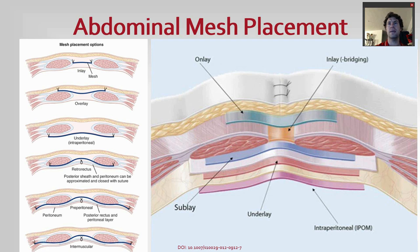With all these different spaces, there are many different ways to place mesh. You have an onlay, which is on top of the muscles. An overlay extends a bit farther. An underlay goes underneath everything including the peritoneum. In the retrorectus position, the peritoneum or posterior sheath is closed and mesh goes on top of that. There is also preperitoneal and intramuscular placement — the intramuscular position is what a TAR release would be.